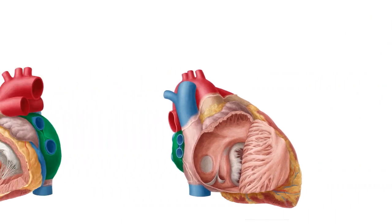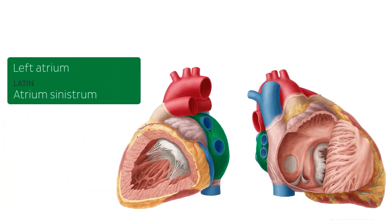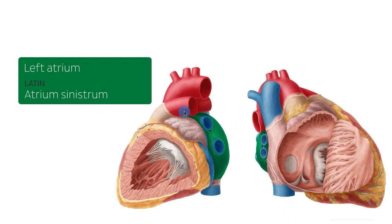Let's start with the first structure highlighted in green, which is the left atrium. On this image we're highlighting it from a left lateral view, while on this image we're highlighting it from a right lateral view of the heart — here we have the right atrium cut open but we still see the left atrium highlighted in green. The left atrium receives oxygenated blood from the pulmonary veins, which you can also see here, then pumps it into the left ventricle via the mitral valve, which we're going to be talking about later in this tutorial.